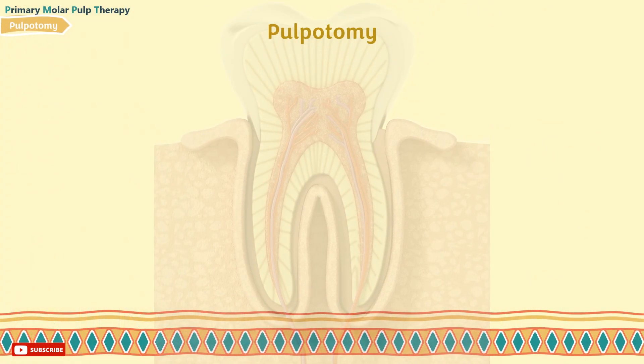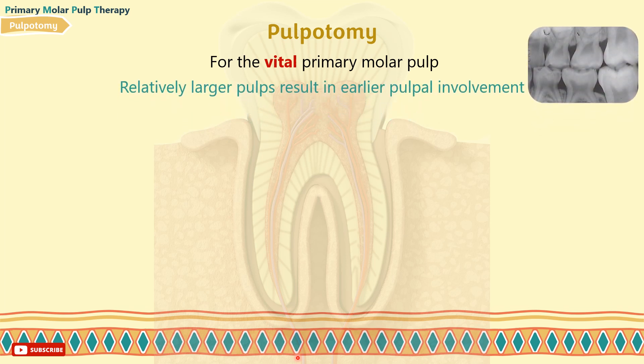The second technique is pulpotomy — the removal of the coronal pulp tissues only. In primary molars, the relatively larger pulps result in earlier pulpal involvement. Therefore, amputation of the coronal pulp, leaving healthy radicular pulp in situ, gives more consistent results than other techniques that attempt to retain vitality of the whole pulp, like direct pulp capping.